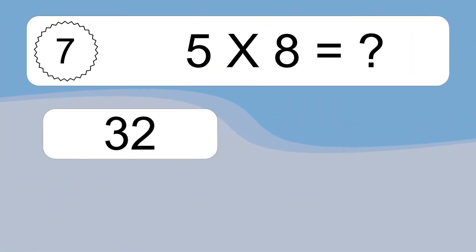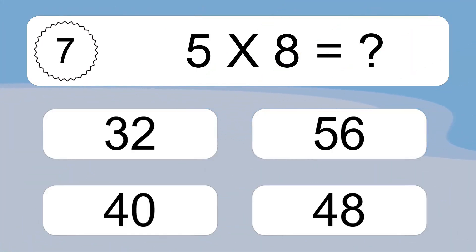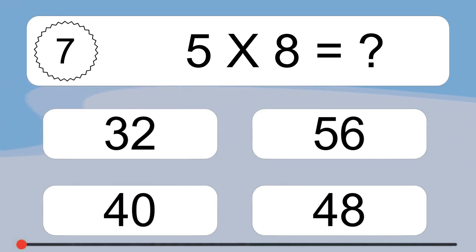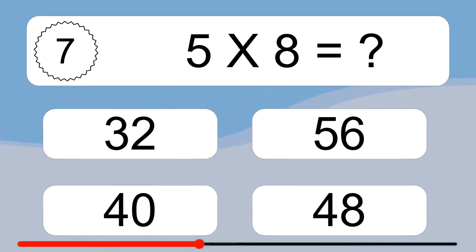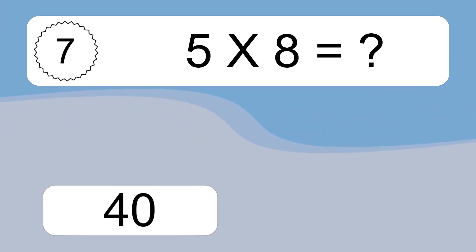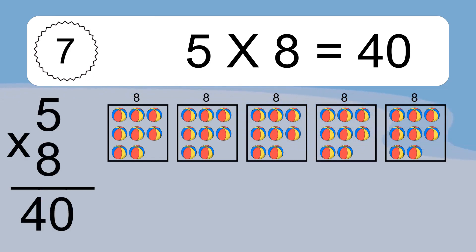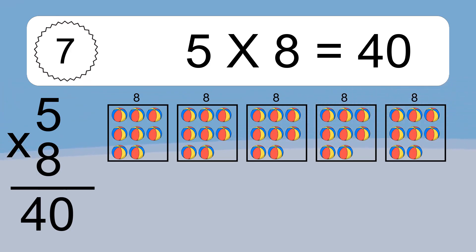5 times 8 equals what? We have 5 boxes, and each box has 8 colorful balls inside. If you count all the balls in all the boxes together, you will have 5 times 8 balls. This equals 40 balls.